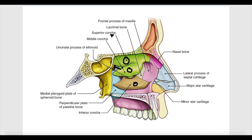These meatuses have ducts and paranasal sinuses opening into them, which will be discussed in detail in a separate video. The angle between the horizontal plate of the ethmoid bone and the downward sloping of the sphenoid bone is called the sphenoethmoidal recess, because it is between the sphenoid and the ethmoid bones.